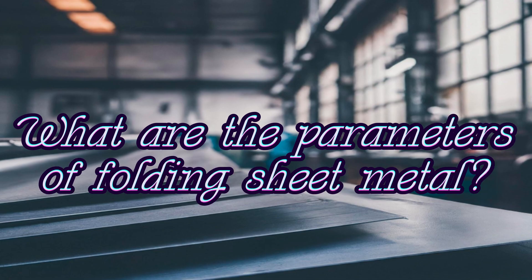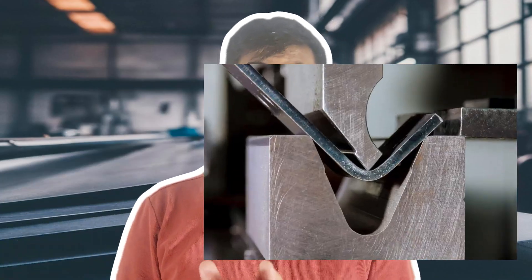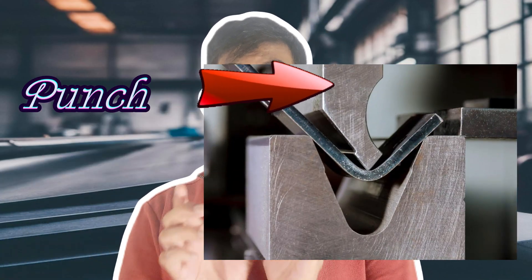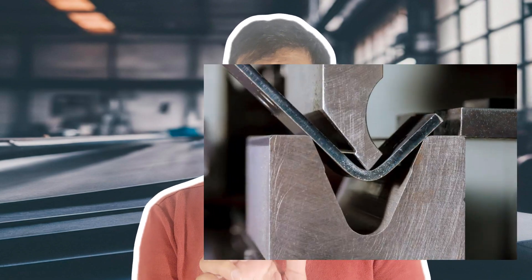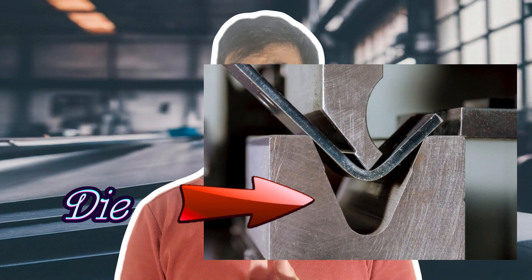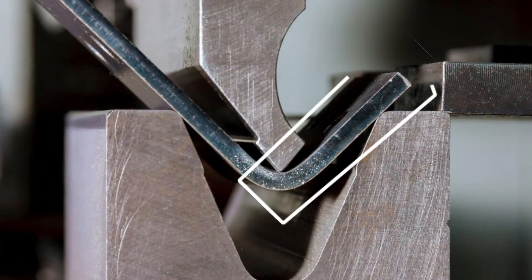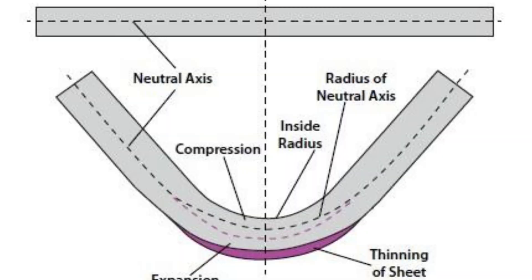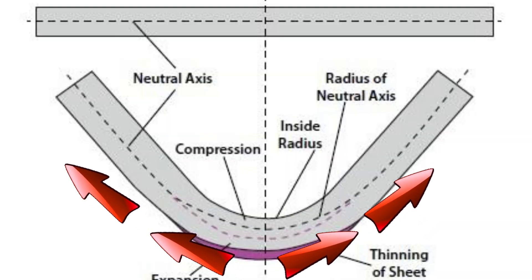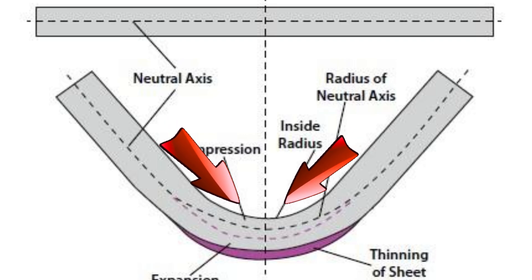The key parameters and terms used in press brake folding are as follows. The top part which applies the force is called the punch, and the bottom part which holds the sheet metal is called the die — also known as the V block. The slant visible in the diagram is known as the flange length, or outside-to-outside dimension for bending. On the outer surface of the sheet metal, a tension force is applied which goes outward, and on the inside surface where the punch hits, it undergoes compression force.